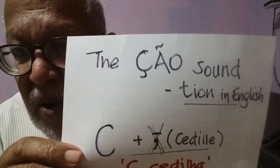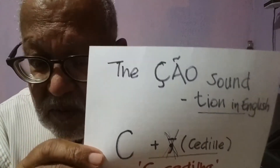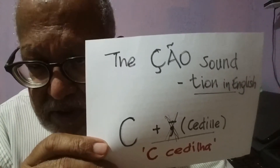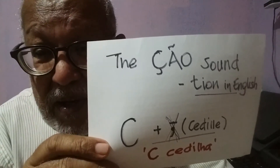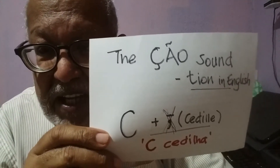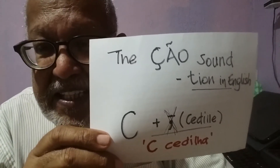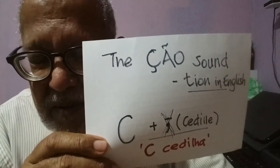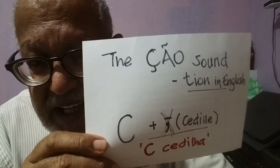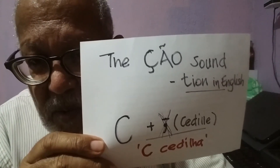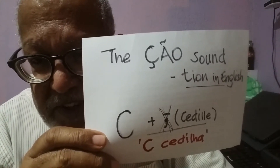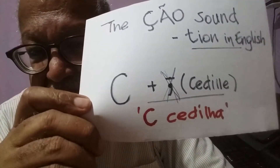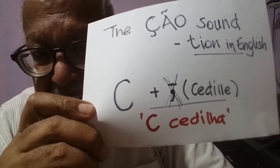When school children in Brazil learned how to pronounce this termination, we had to say out loud 'cedil-a-tilde-o,' which in English would be something like 'cedil-a-tilde-o.' The cedilha is this little marker that goes under the C, and the sound is 'som' (some).